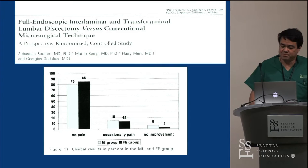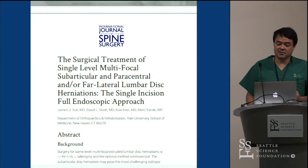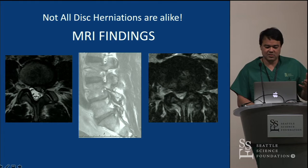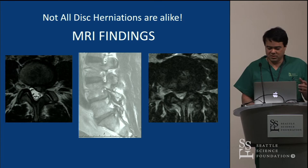We looked at multifocal disc herniations — a far lateral subarticular as well as a central herniation — treating this same patient with one technique rather than multiple approaches. A paracentral disc you can treat with micro, open, or endo. But for a patient with a far lateral compressing the DRG, subarticular and central, with the scope you can attack that disc herniation that squirrels up toward the exiting nerve root — all with one approach, one surgery, 45 minutes. Patient's awake and goes home the same day.